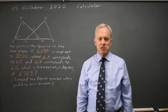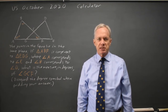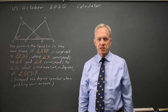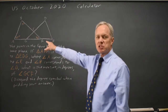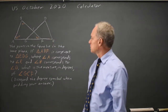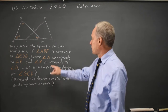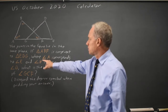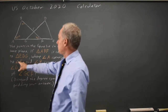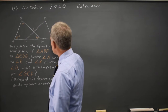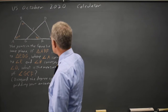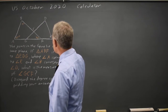I'm Dr. Roger, and this question is from the October 2020 U.S. exam calculator section. College Board gives us a pair of similar triangles where angle A corresponds to angle E. Since angle A is 65 degrees, angle E is also 65 degrees.